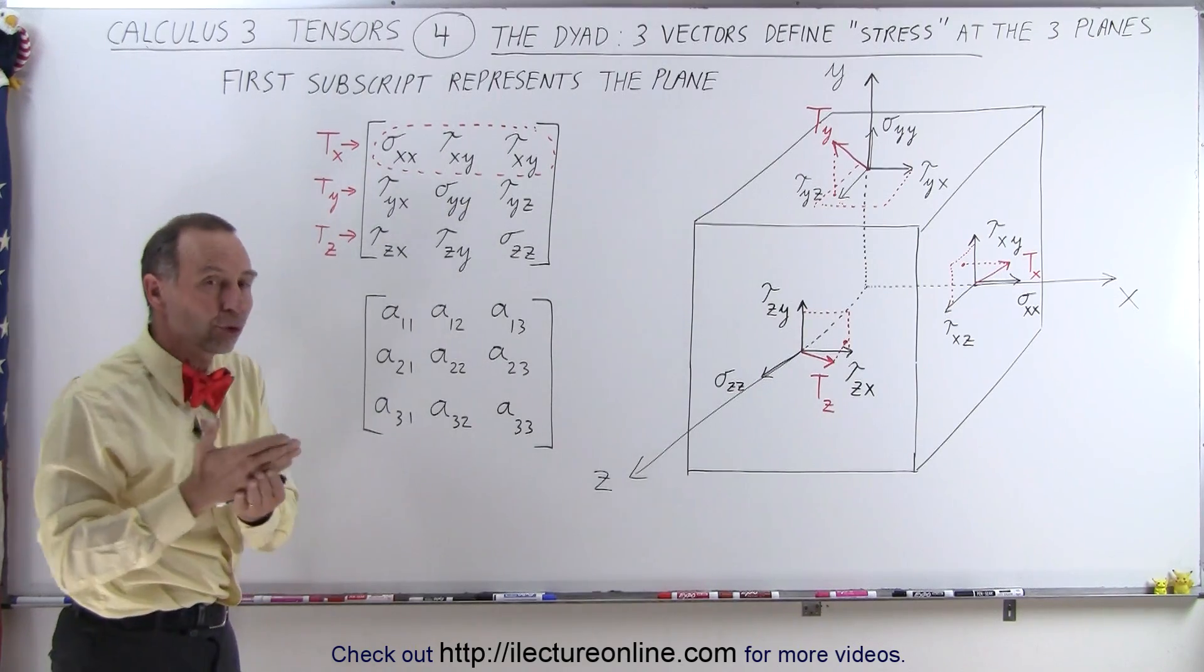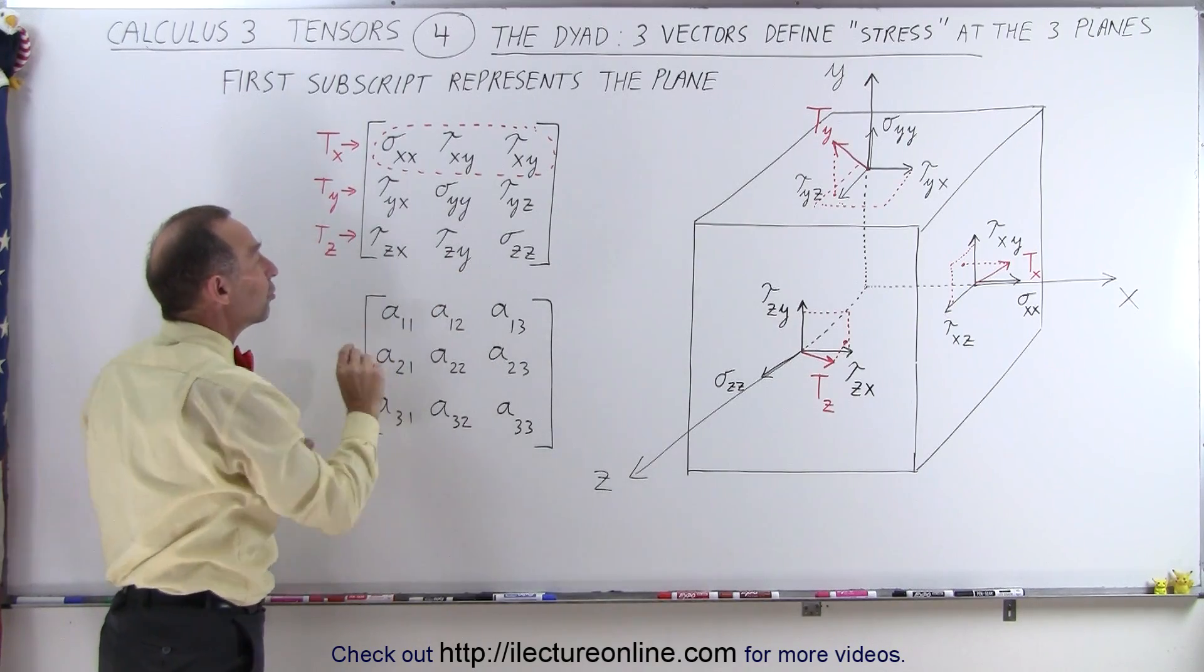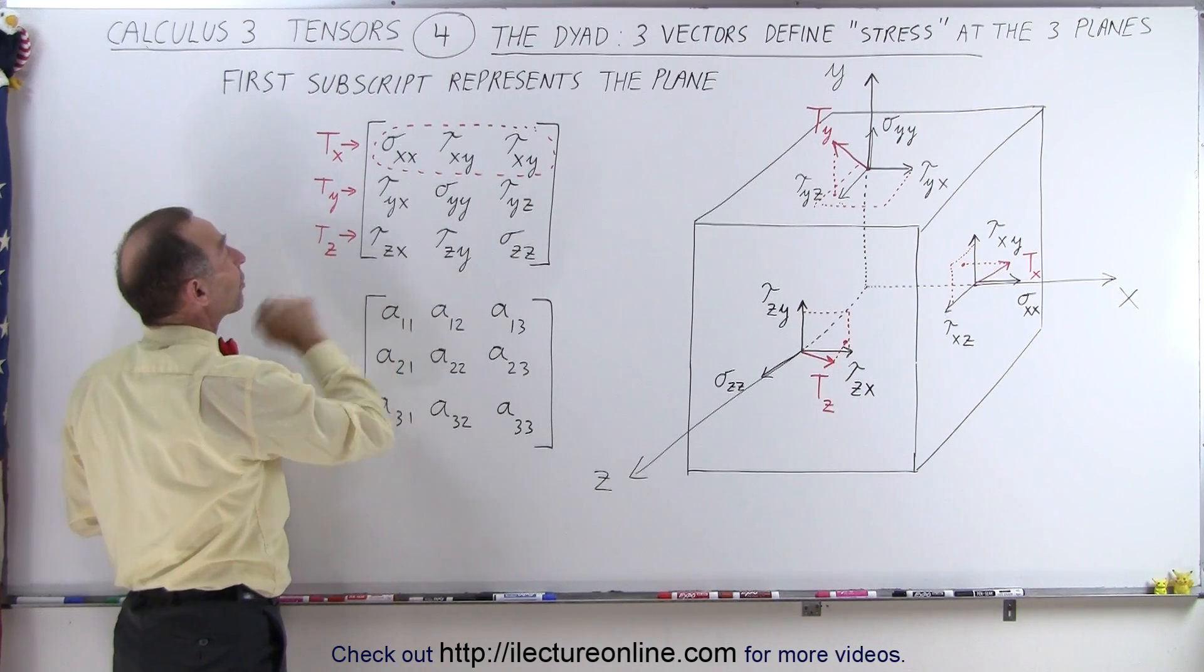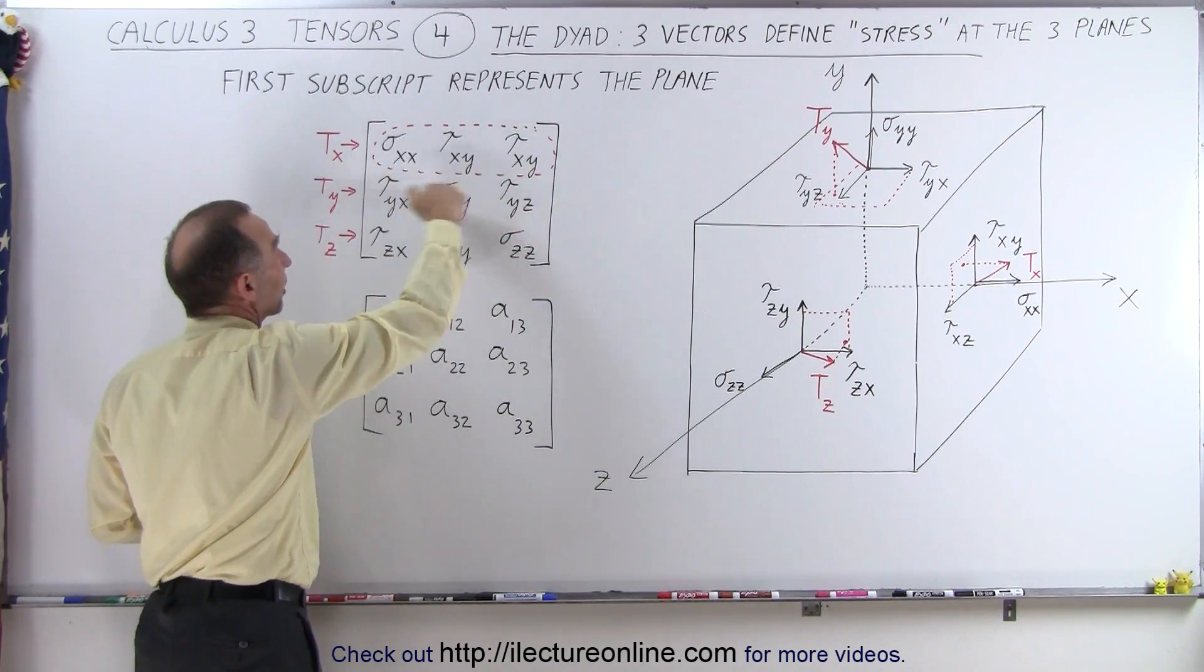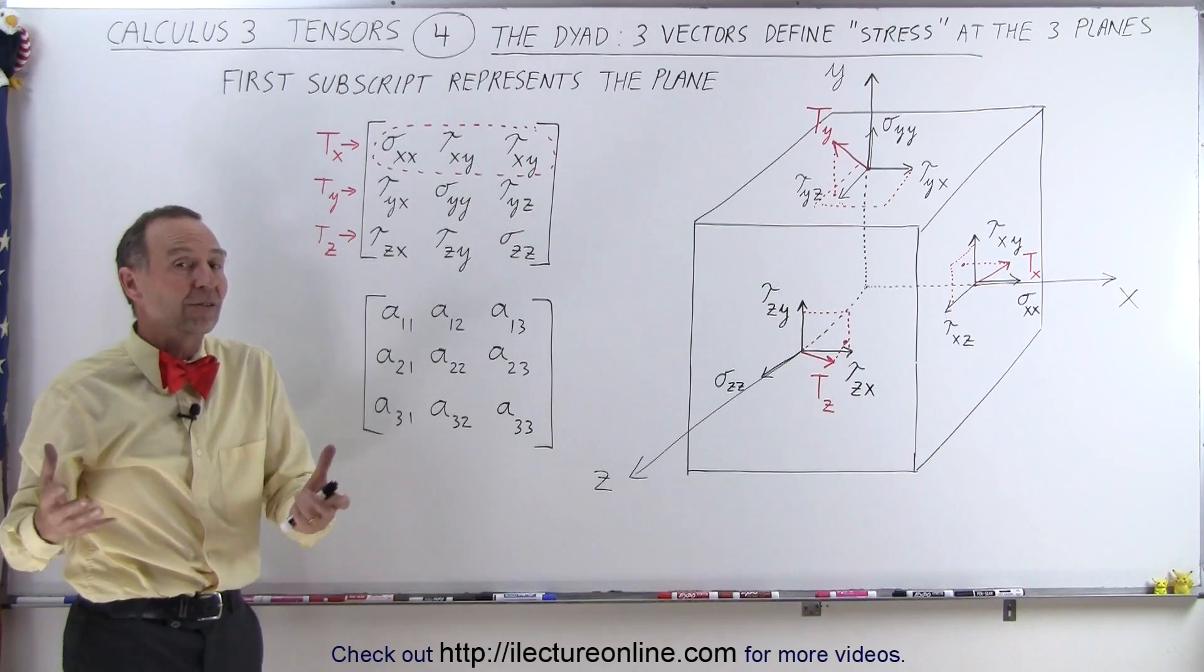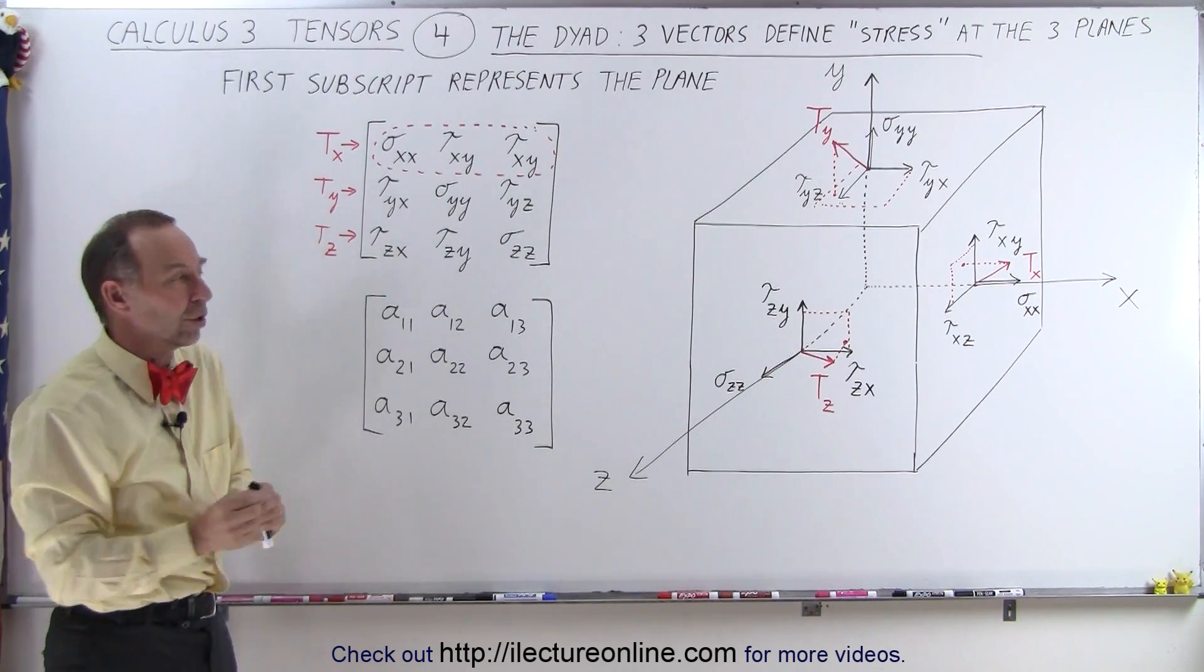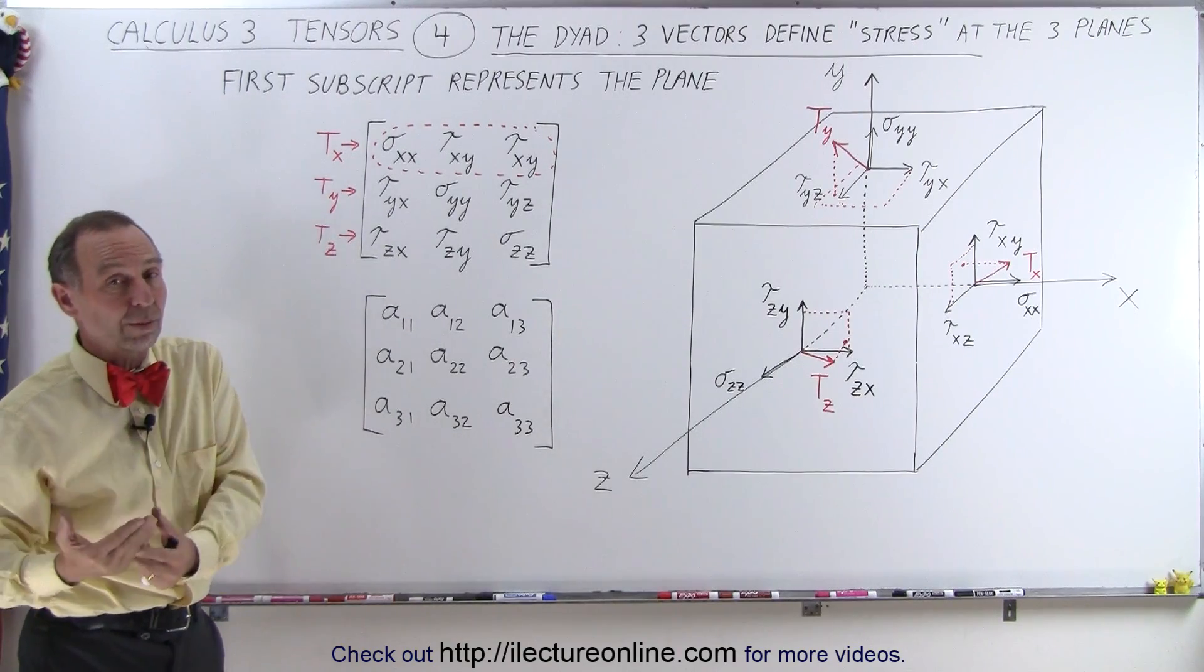Make sure you understand from the description and context which way these components have been represented. For example, which way the subscript of the components have been represented. Are the three vectors represented by the components cut like this, or like this? It depends on the textbook or reference you're using. Just always make sure the first subscript represents what, and the second subscript represents what.